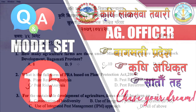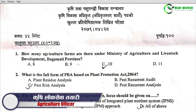Question 1: How many agriculture farms are there under Ministry of Agriculture and Livestock Development, Bagmati Province? Option A: 8, Option B: 9, Option C: 10, Option D: Level. The correct answer is Option C: 10.